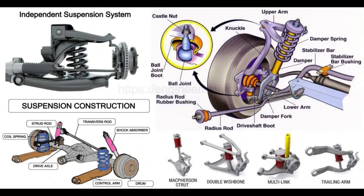The suspension system of a vehicle isolates the wheel section from the body. All the power that is generated by the engine is finally transmitted to the wheel through the power transmission system. With this power, the vehicle moves on the road.